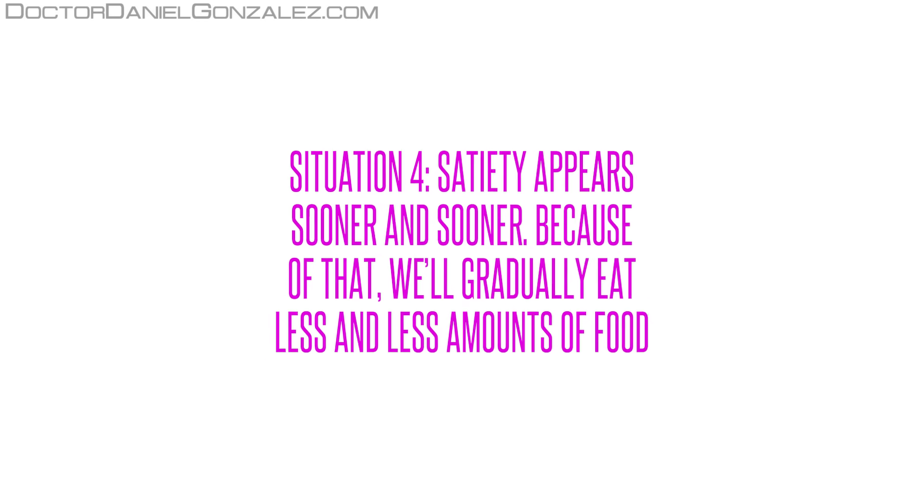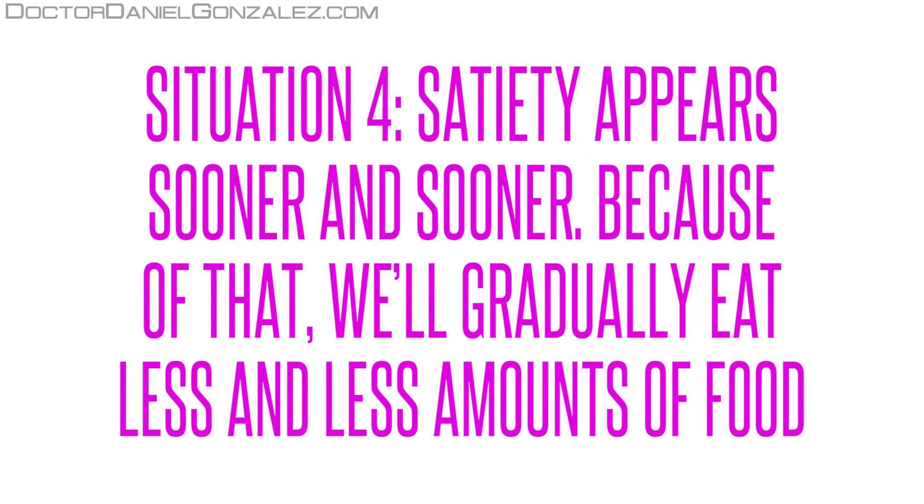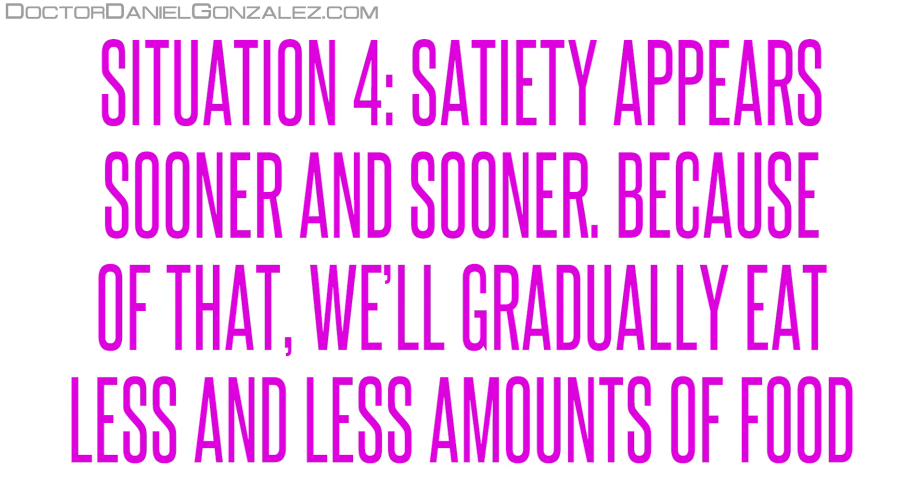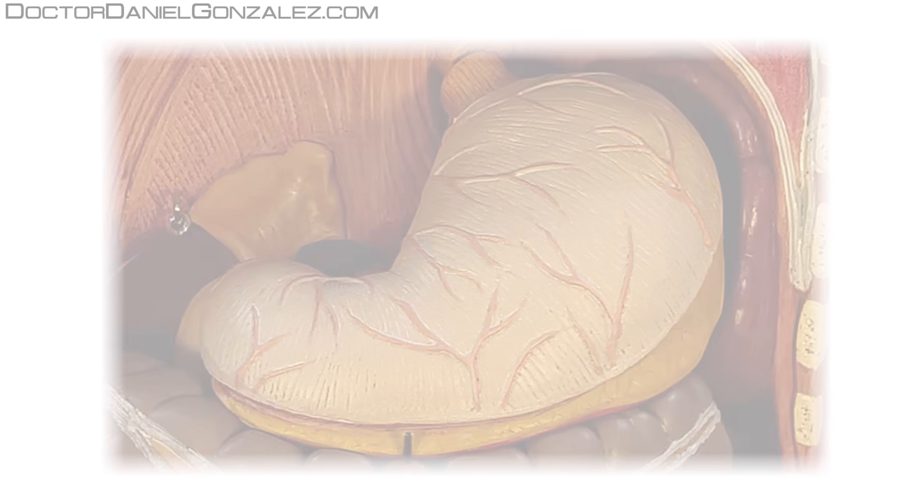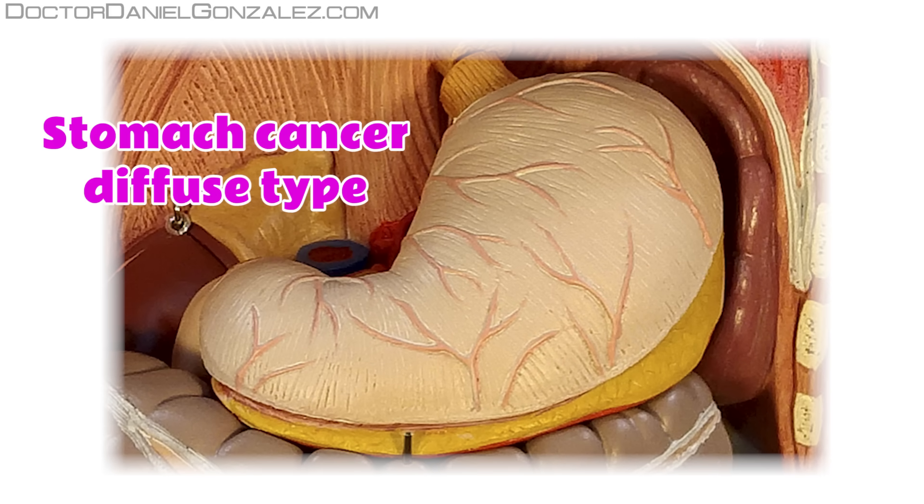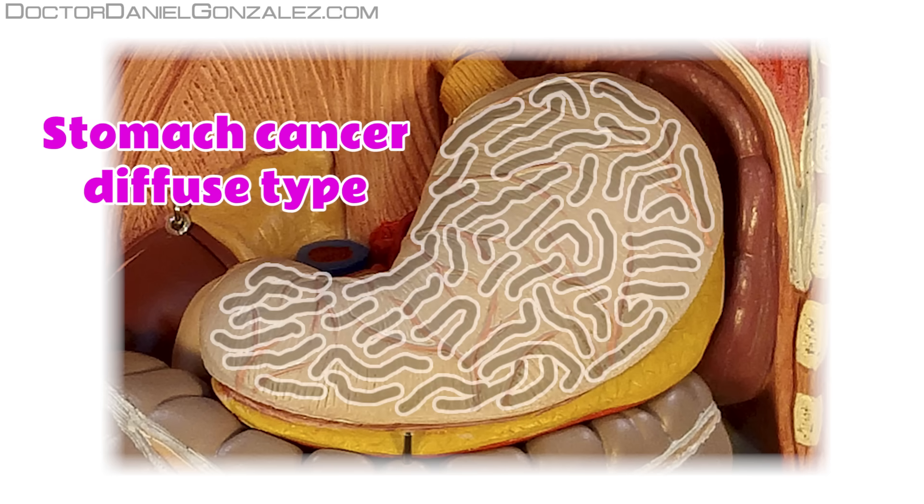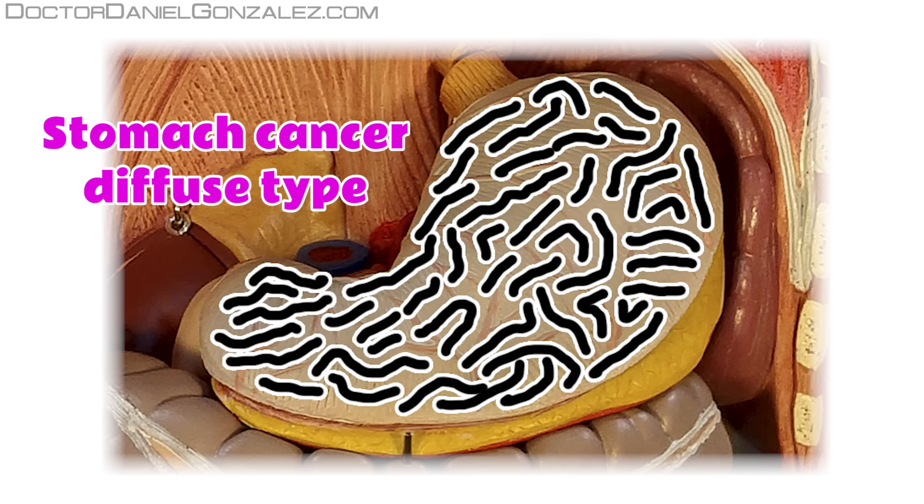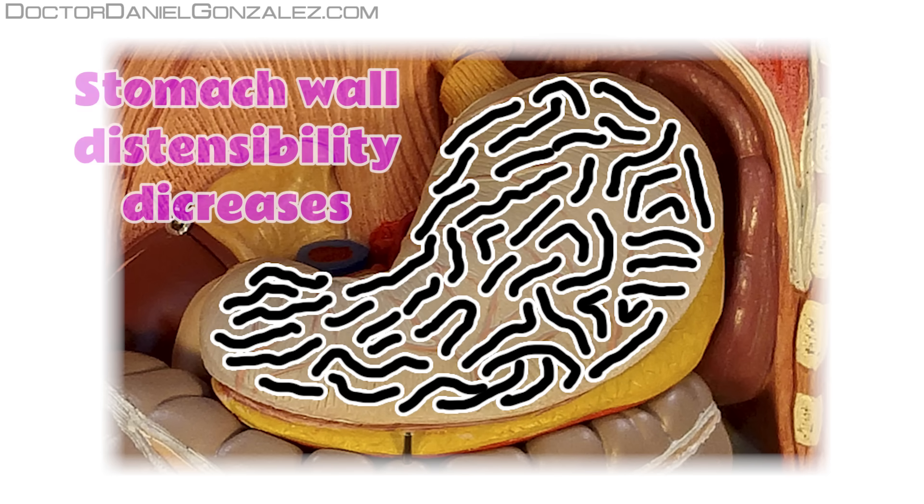Situation 4. Satiety appears sooner and sooner. Because of that, we'll gradually eat less and less amounts of food. The less common variety of stomach cancer is the diffuse variety, which affects the entire stomach, not just one of its parts. If the entire stomach is infiltrated by tumor cells, its wall distensibility decreases.